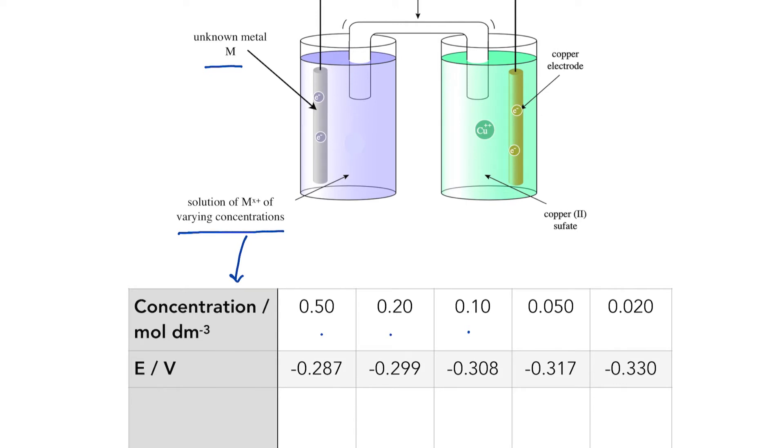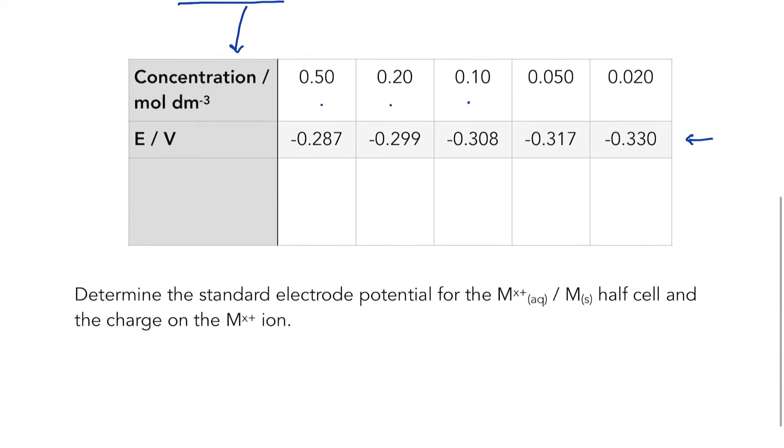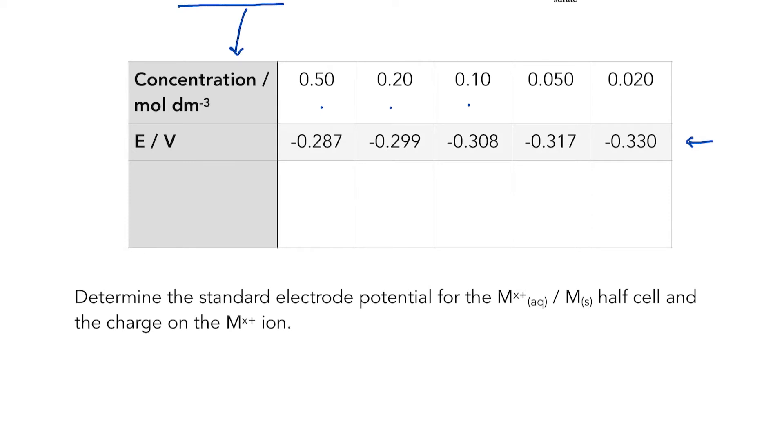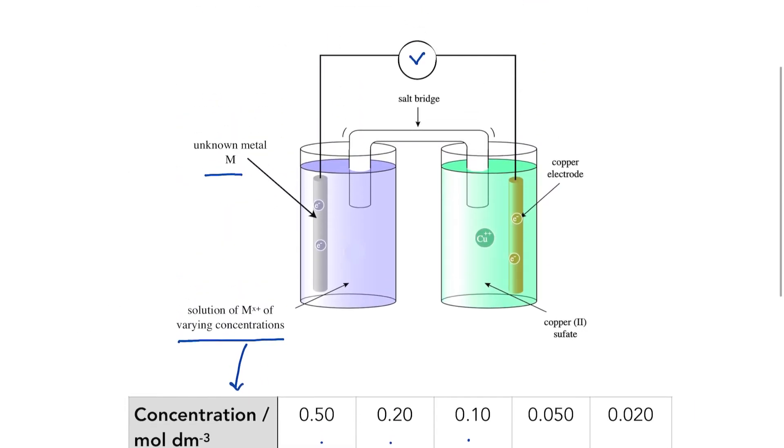They have measured the voltage on the voltmeter each time they have changed the concentration of solution in the left-hand half cell, and we can see that it's becoming more negative. The question goes on to ask: determine the standard electrode potential for this half cell and the charge on the metal ion. As I said, freaks me out. However, that's not the point of the tutorial. The point of the tutorial is to try and not freak you out.